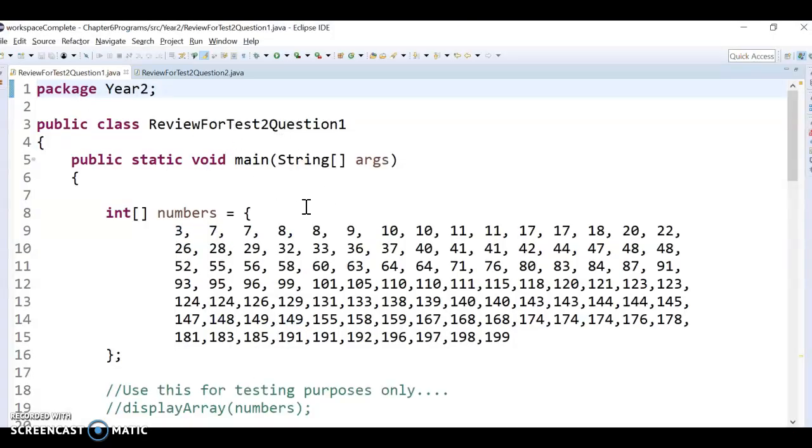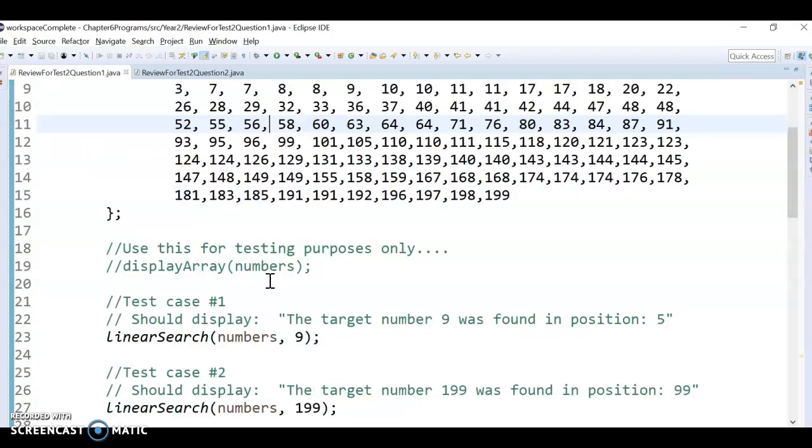All right, and once you've got it loaded, then we're going to kind of code this together. So we've got a bunch of ints in an array called numbers. And I don't know why I put them in order because we're actually going to be doing linear search, which the one time you'd want to use linear search is if they're out of order. But anyways, never mind my mistake there. But at any rate...